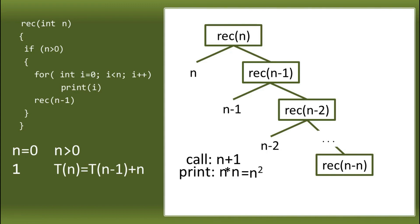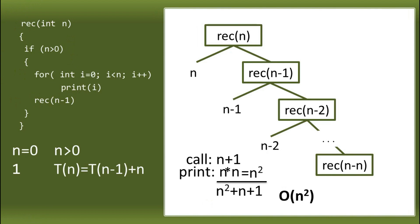Multiplying N times N gives us N squared. So for the print we consider N squared. Computing the total time complexity: we have N squared plus N plus 1. Using the rule of taking the highest-order term, the highest here is N squared. So we can say that the time complexity of this recurrence relation is O(N²) or big theta of N squared.